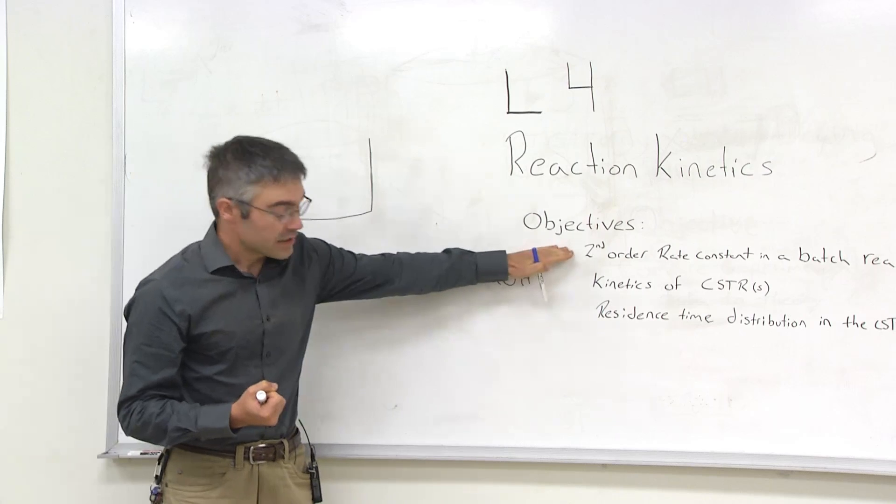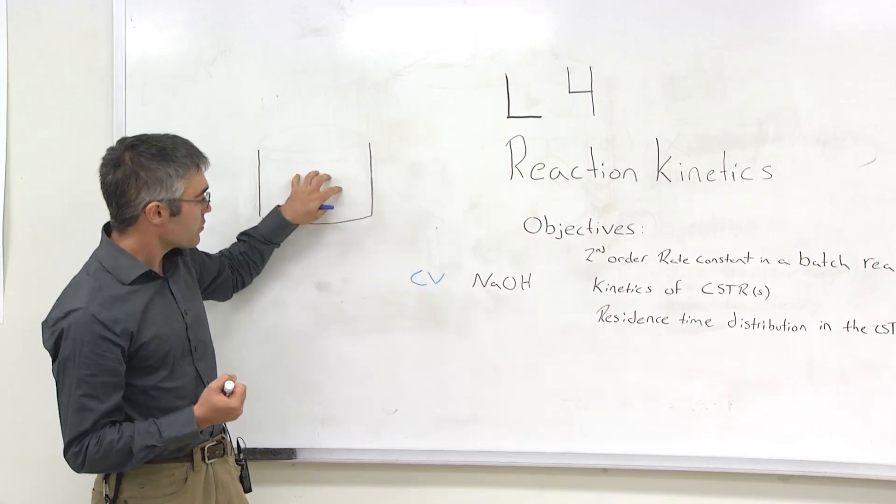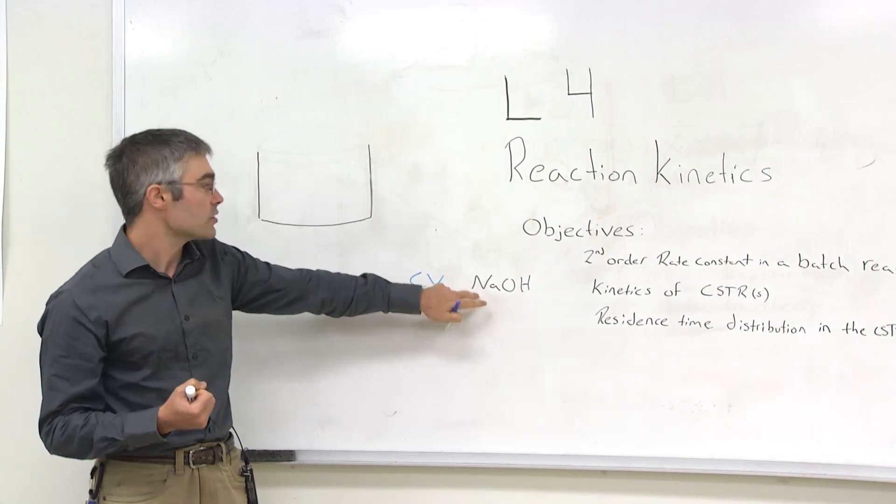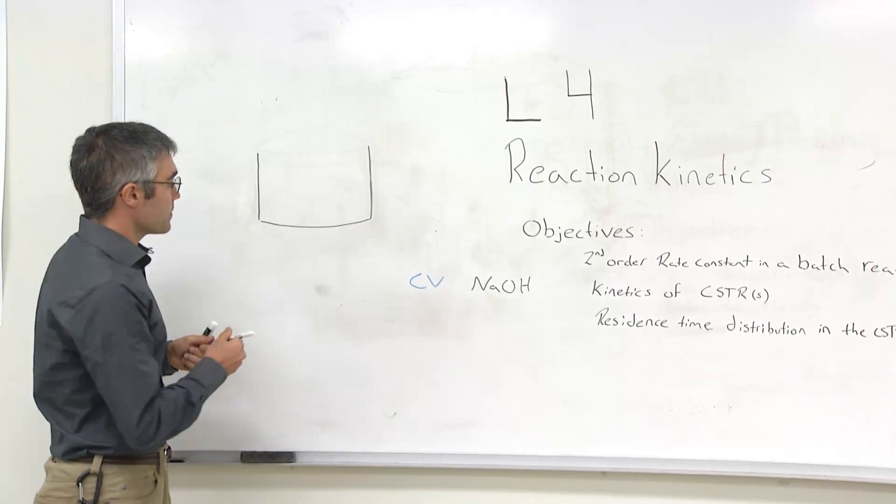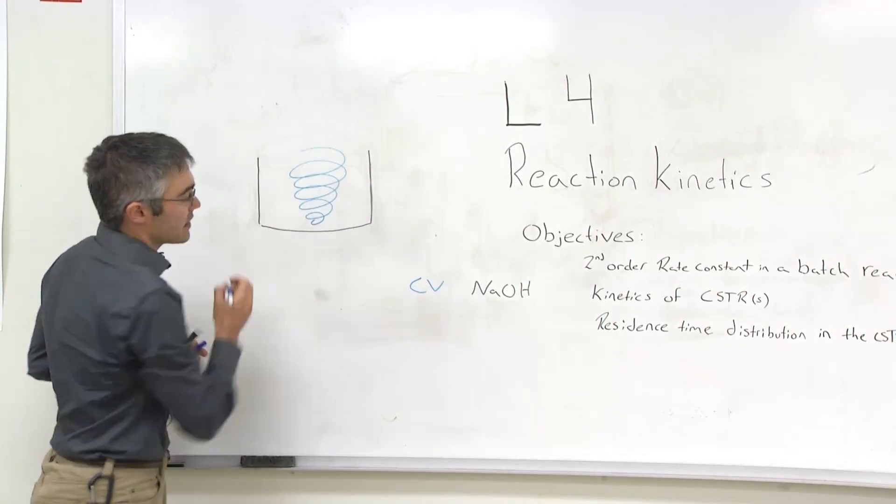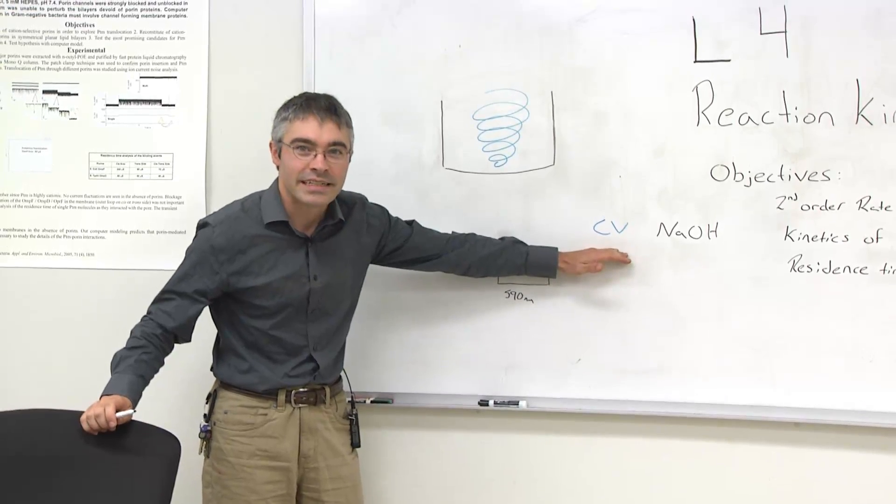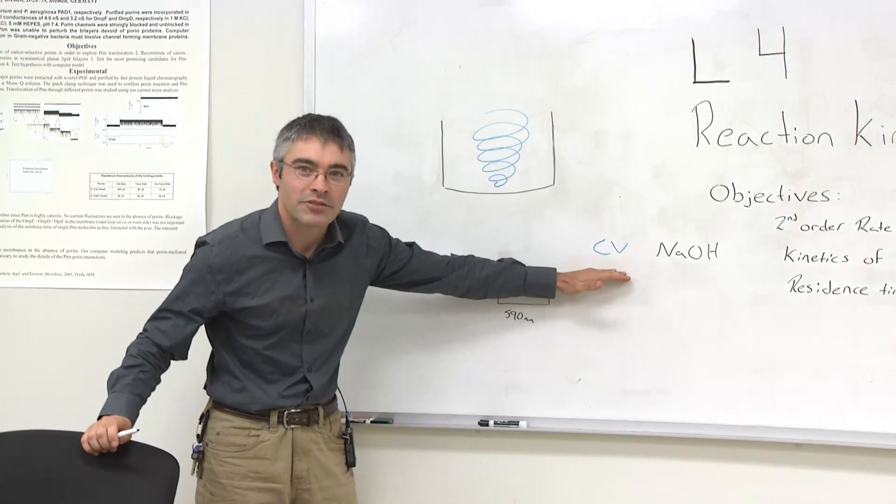In the first miniature experiment, we'll be conducting a batch reaction where we'll be putting both of these reactants in known concentrations into a reactor, applying continuous stirring, and monitoring the state of the reaction. To determine the amount of crystal violet within the solution at any given time, we'll be assessing the solution spectrophotometrically.